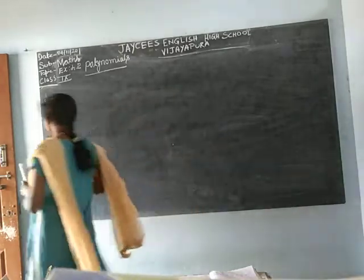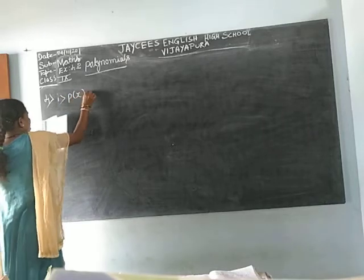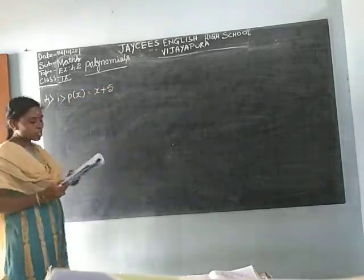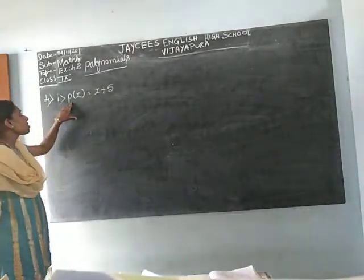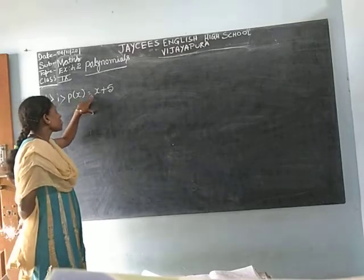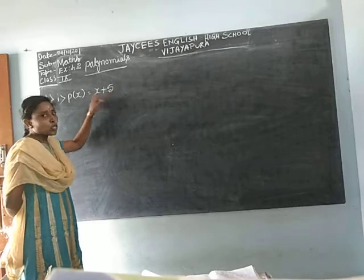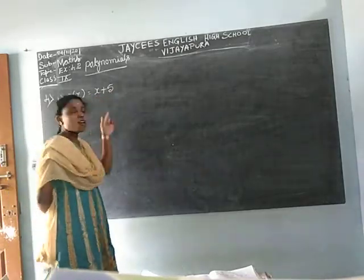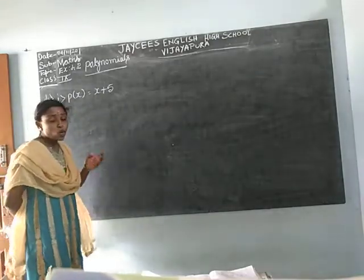First one: P(x) = x + 5. P(x) means polynomial, P means polynomial, x means variable. In x + 5, x is one term and 5 is another term — two terms total. X is a variable, 5 is a constant. We are finding where P(x) = x + 5 gives the zero of the polynomial.